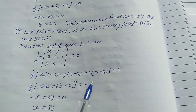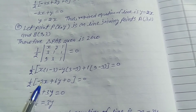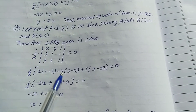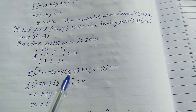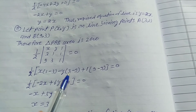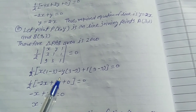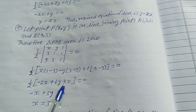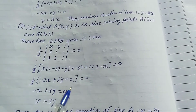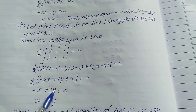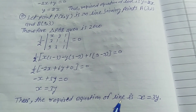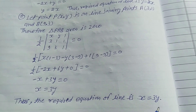Multiplying inside: −2x − y(−6) + 0 = 0, so −2x + 6y = 0. Dividing by 2: −x + 3y = 0, so x = 3y. Thus the required equation of the line is x = 3y. That is the solution.